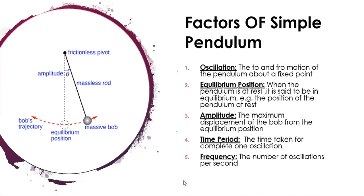As shown in the diagram, a body of mass M is attached to a string with one end fixed. When the body is moved from the equilibrium to the extreme position, the angle made at the center is theta, and the distance from mean to extreme position is the amplitude. The path covered by the bob is called trajectory, shown by the red dots in the figure.